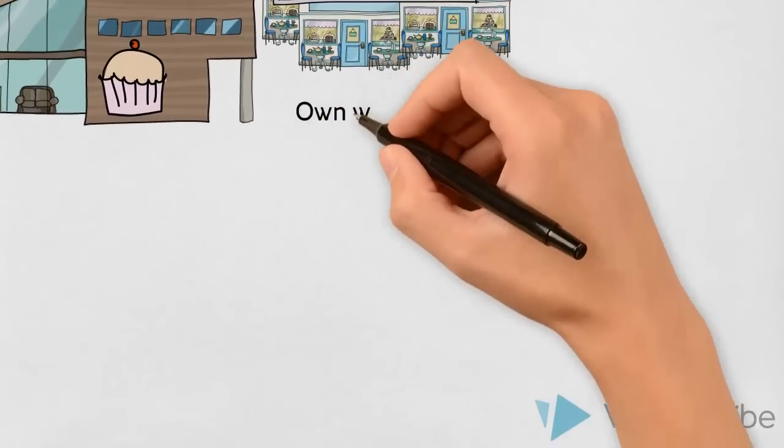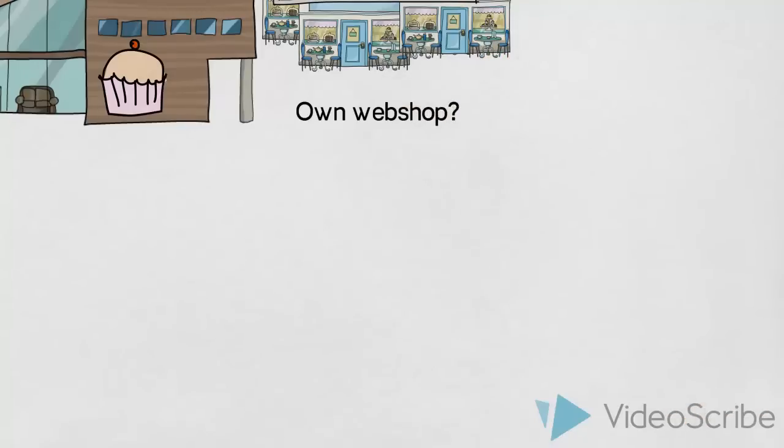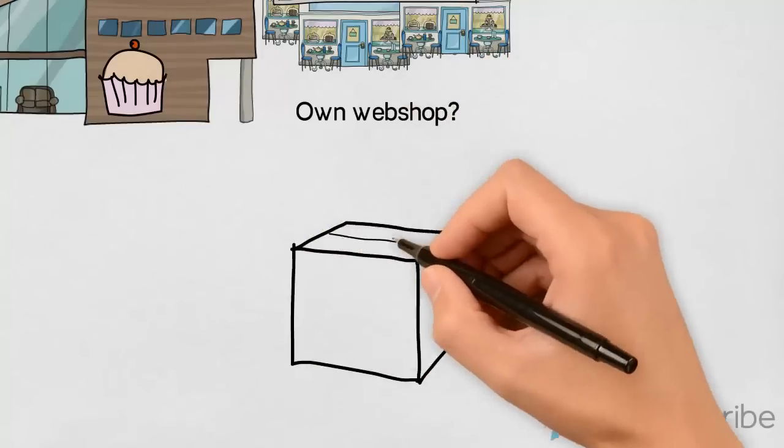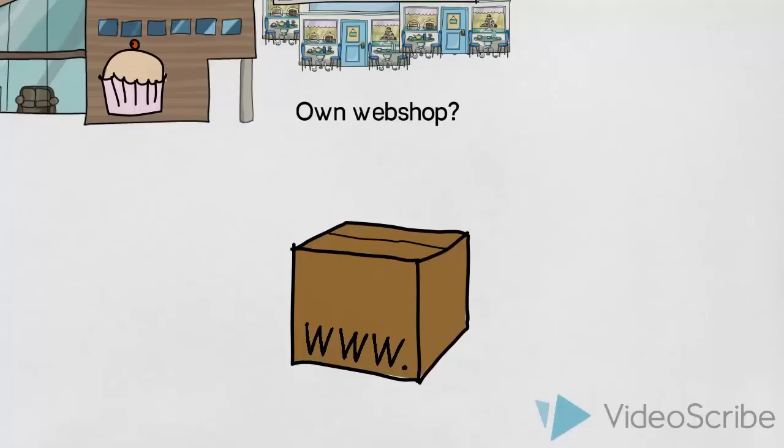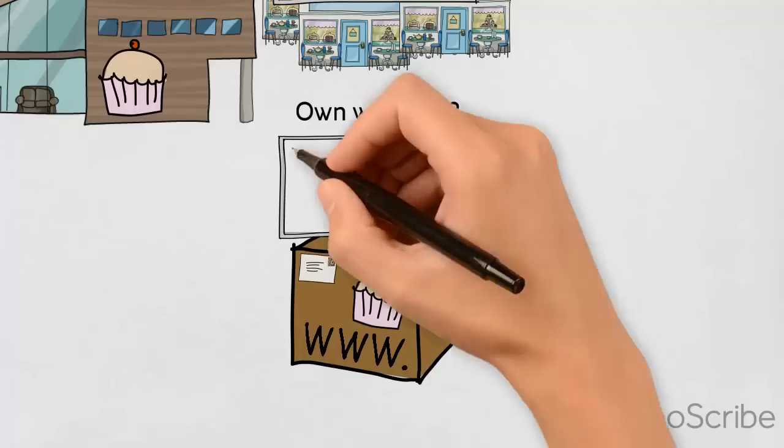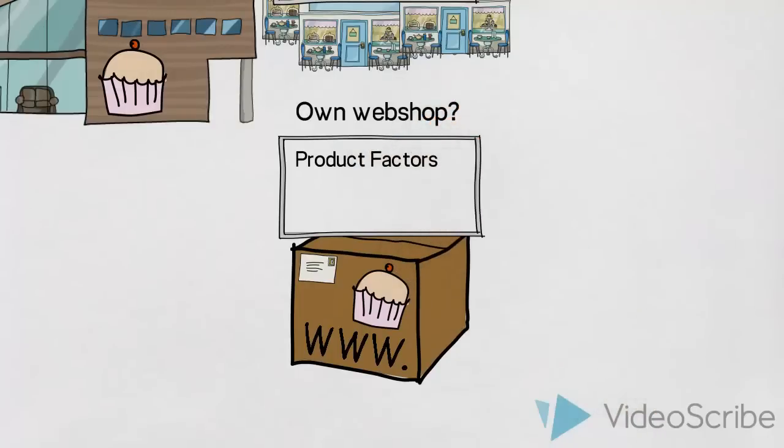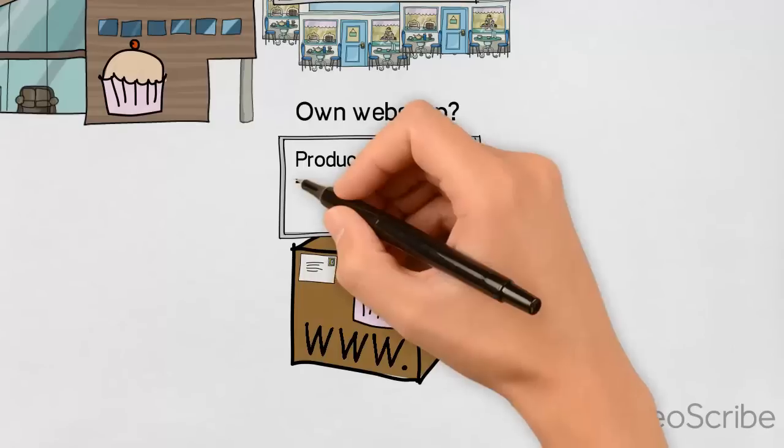We could also imagine that the company were keen on creating an online webshop, where their customers could order their cakes and desserts and get them delivered directly to their homes. In addition to the market and producer factors which we have already discussed, we would also advise them to consider some factors about the actual products.